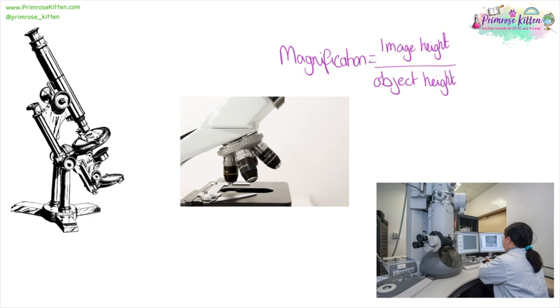If you want to work out image height, object height or magnification from an image you've taken from a microscope, the calculation is magnification equals image height over object height.